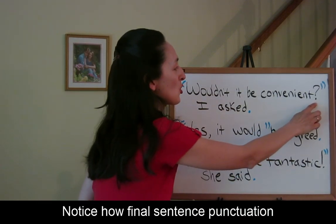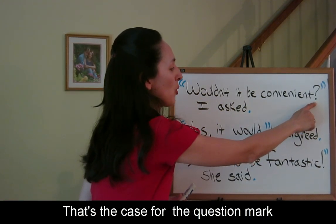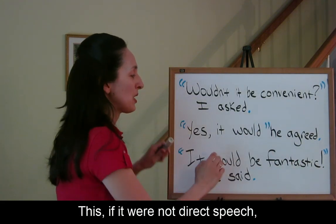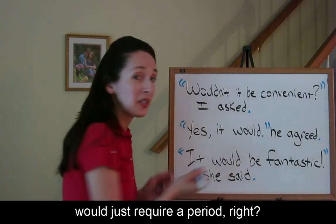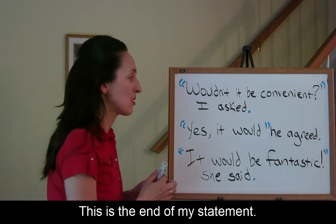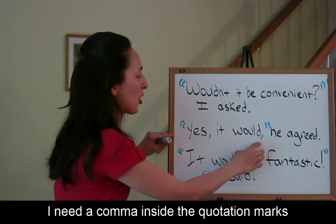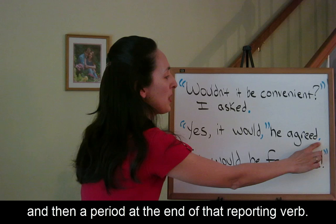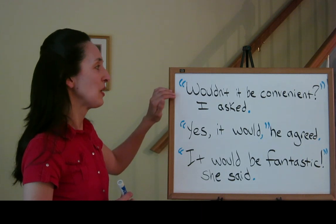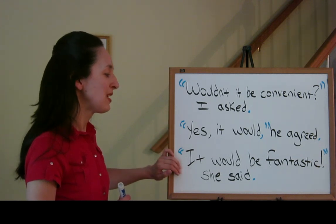Notice how final sentence punctuation in the direct speech falls inside the quotation marks — that's the case for the question mark and the exclamation point. This, if it were not direct speech, would just require a period. But we can't have two periods. This is the end of my statement, so instead of a period, I need a comma inside the quotation marks and then a period at the end of that reporting verb. Again: 'Wouldn't it be convenient?' I asked. 'Yes, it would,' he agreed. 'It would be fantastic,' she said.